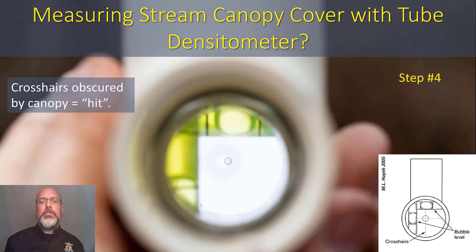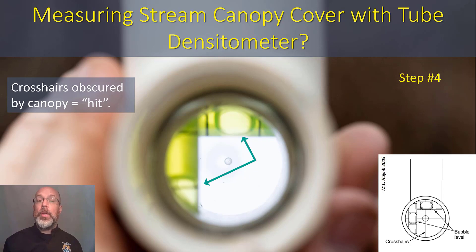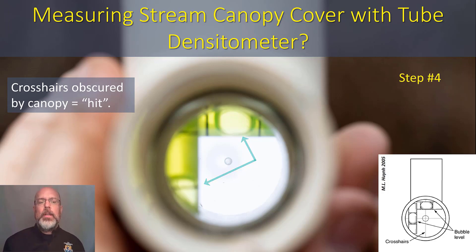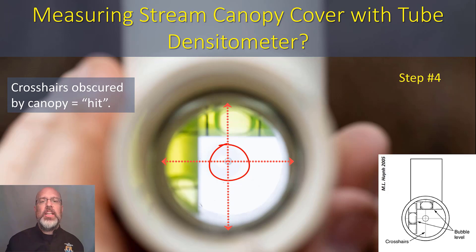Step four: you can see a view looking in to the tube densiometer. There are two levels — you want to make sure both of those are level so that you're looking directly up at the canopy. You can see in our photo only one of those is level, but in the diagram on the bottom right, both bubbles are level, confirming you're looking straight up. Then, in the crosshair — the centerpiece right in the middle — if there is vegetation there, you consider that a hit. If the vegetation is obscuring the sky at that one point, it's a hit.